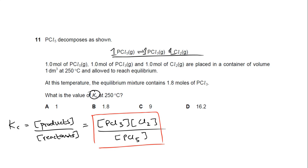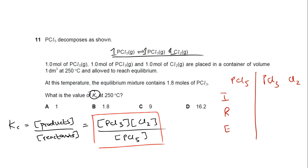My number one tip for all Kc questions: write down all the molecules and substances involved in the reaction, then write down I, R, E. I stands for Initial, R stands for Reacted, and E stands for Equilibrium — concentrations at three different points. I like to draw a line between products and reactants to differentiate them. For products, the 'reacted' row is nothing; instead there is a 'formed' value.